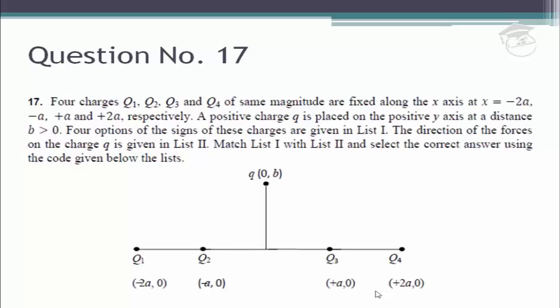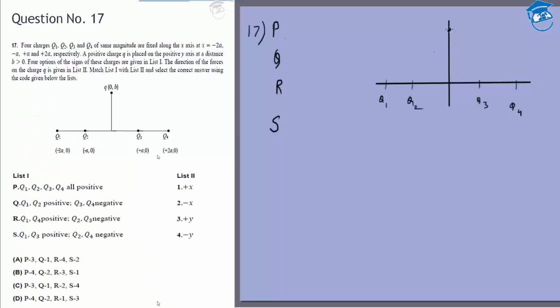We are given four charges Q1 through Q4 and a point Q. For different values of the signs of the charges, we need to find out the direction of the force on a particle of positive charge q — which basically means the direction of the electric field. Because this charge is positive, the electric field due to all four charges will be radial; whether radially outward or inward depends on the signs of those charges.